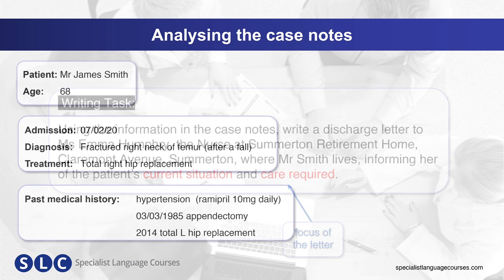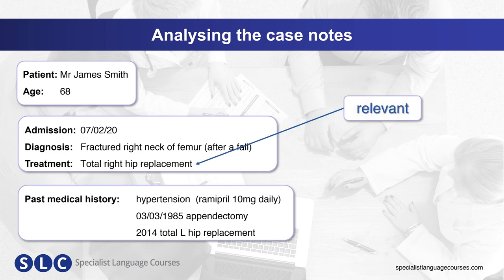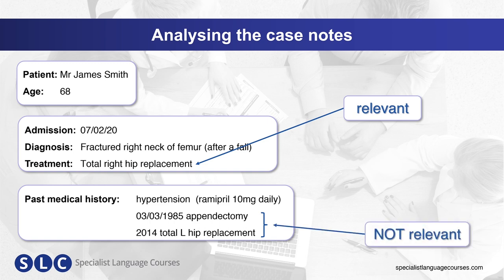Let's continue looking at this example. In this case, the fact that the patient underwent a total right hip replacement is relevant. The reader does need to know this information because it tells them the main treatment received. However, here in the past medical history, details of previous operations are not relevant to the current situation or ongoing care.